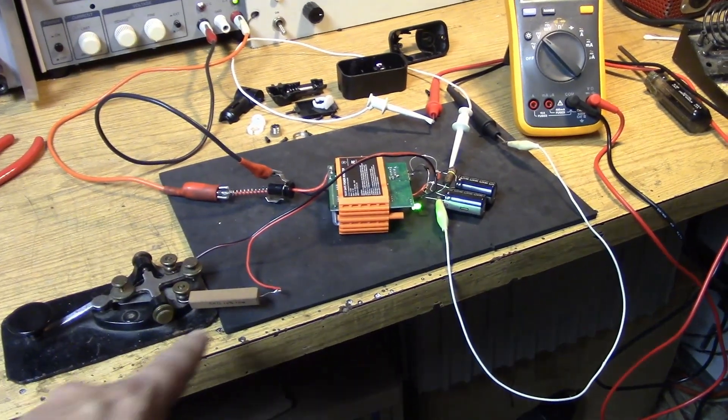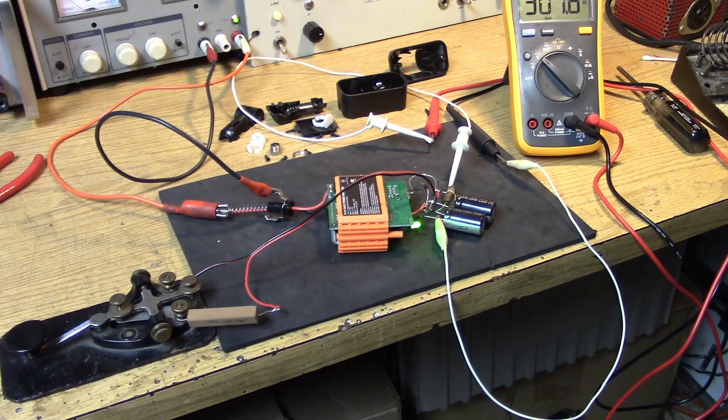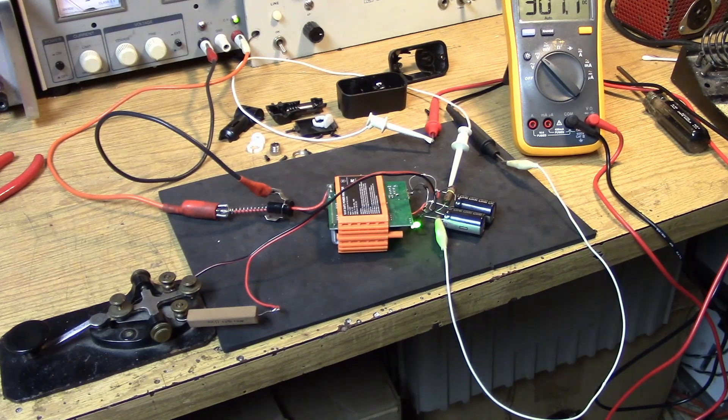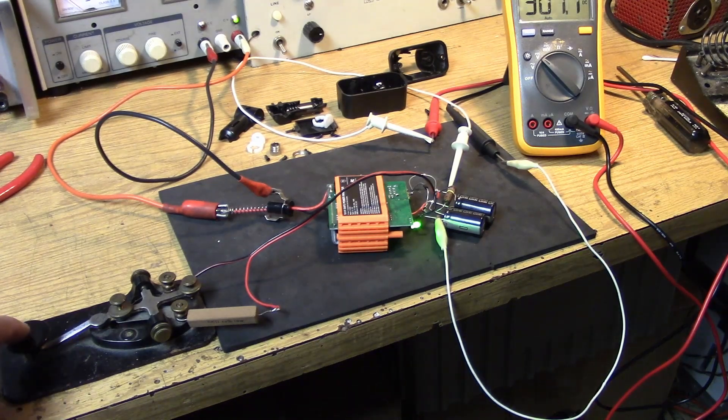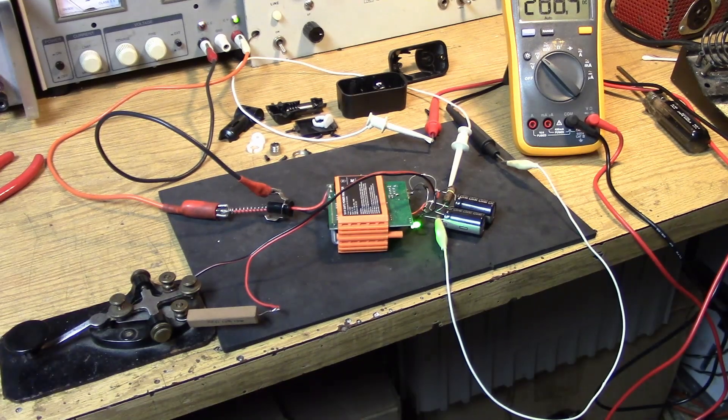So, I now have a 5K load resistor on 300 volts. That's going to give a 60 milliamp draw. Let's see what we're going to go down to. Okay. Looks like 275. That's not bad. That's a 25 volt drop under load.